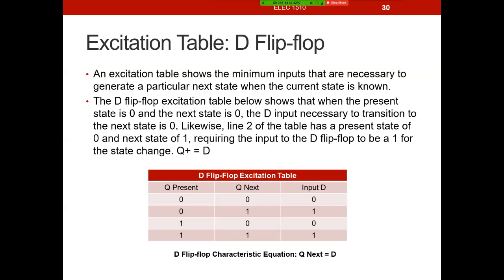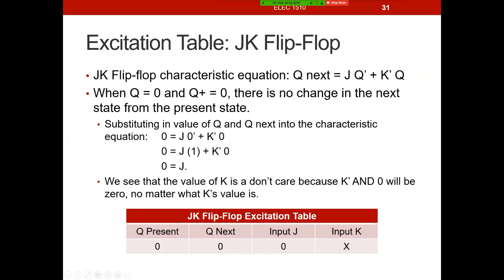For D flip-flops, the value of D has to be the same as Q_next, so we don't really have to drive any external circuitry — we'll see that when we create the circuits for the finite state machine. Now let's take a look at the JK excitation table. We go back to the JK flip-flop characteristic equation: Q_next = J·Q' + K'·Q.